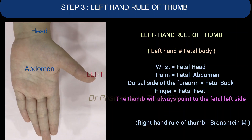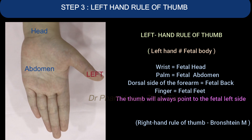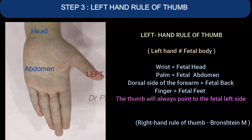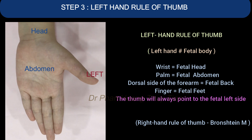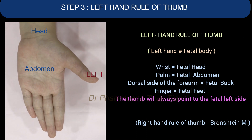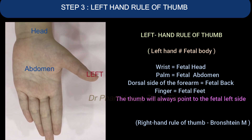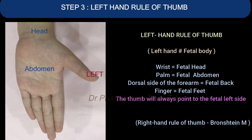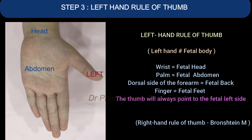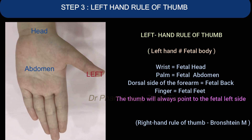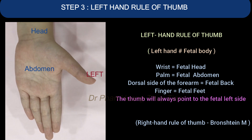Step 3: Left hand rules of thumb. As shown in the picture, the wrist represents the fetal head, the palm equals the fetal abdomen, and the dorsal side of the forearm is equivalent to the fetal back. The fingers represent the fetal feet, and please note that the thumb will always point to the fetal left side.